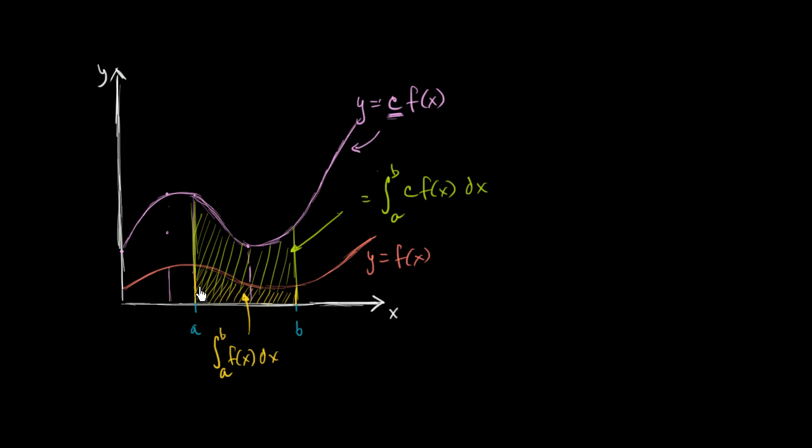Well, one way to think about it is we just scaled the vertical dimension up by c. So one way that you could reason it is, well, if I'm finding the area of something, if I have the area of a rectangle and I have the vertical dimension, let's say the vertical dimension is alpha and the horizontal dimension is beta, we know that the area is going to be alpha times beta.